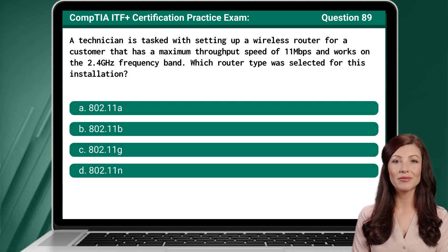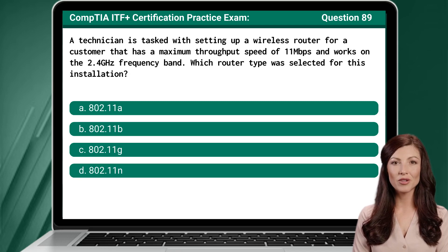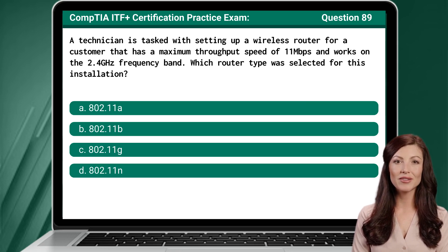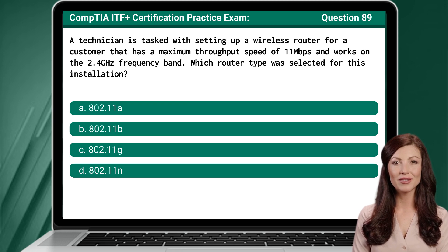Question 89. A technician is tasked with setting up a wireless router for a customer that has a maximum throughput speed of 11 megabits per second and works on the 2.4 gigahertz frequency band. Which router type was selected for this installation?